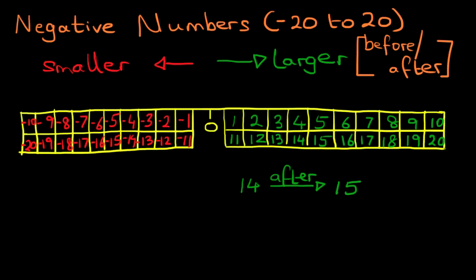And let's use the number grid. We have 14 and notice how we drew the arrow from 14 to the next one, 15. All the numbers after go in this direction, go towards the right. That is after.